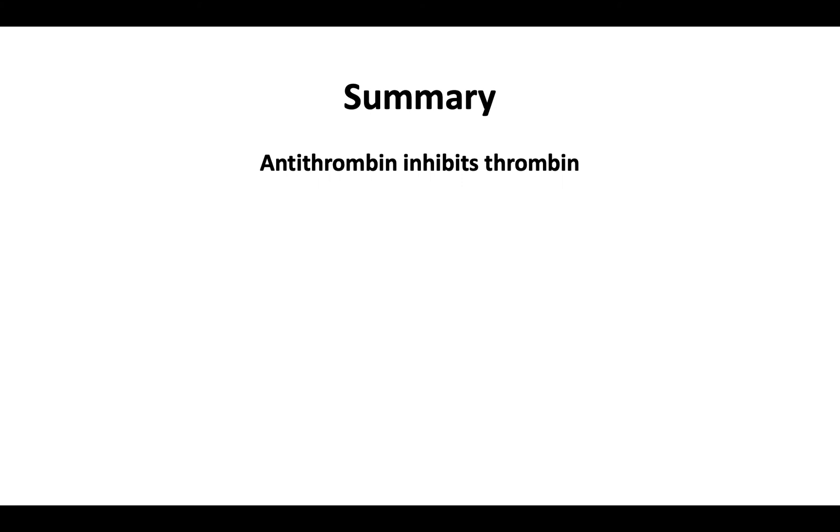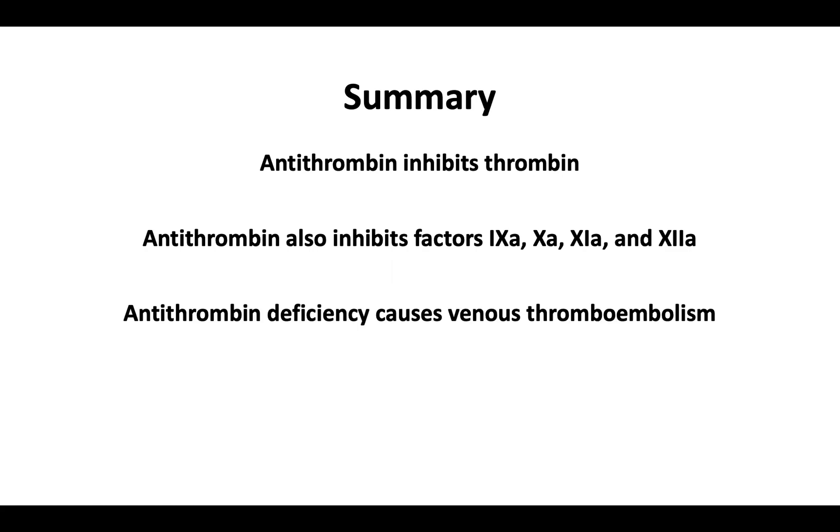In summary, antithrombin inhibits thrombin. Antithrombin also inhibits factors 9a, 10a, 11a, and 12a, and antithrombin deficiency causes venous thromboembolism.